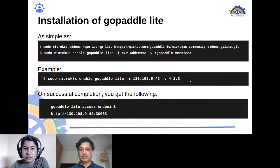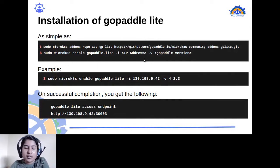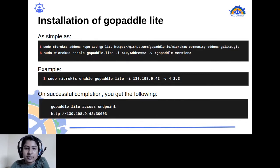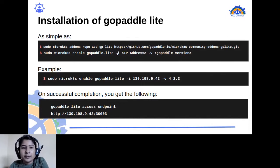You execute two commands to enable GoPaddle Light. It is flexible for all environments — you can install it on your local desktop, a VM, or any host. To enable the GoPaddle Light add-on, you can provide the optional hyphen-i and hyphen-v options. Hyphen-i indicates the static IP address of the instance — for example, if installing on an AWS instance, you provide the public IP address.